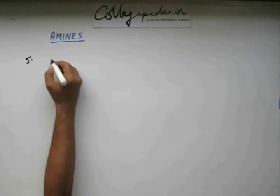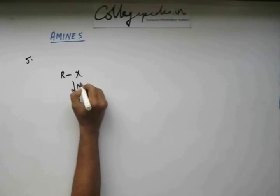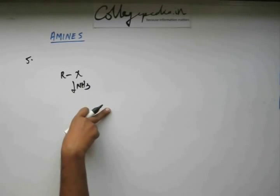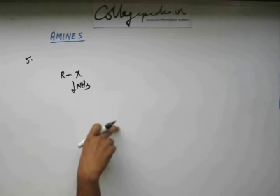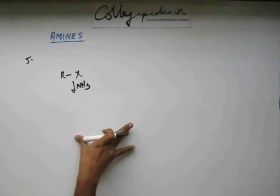Reaction number 5. We were talking about when we added ammonia to this alkyl halide, apart from 1° amine there will be 2° amine, 3° amine, and ammonium salt as well. So we can get higher percentage of 1° amine if we put ammonia in excess, but there will be a mixture.